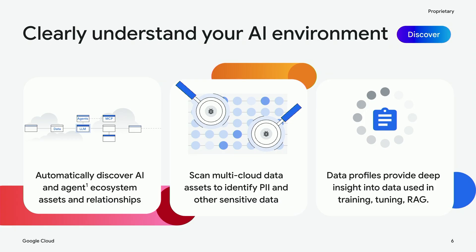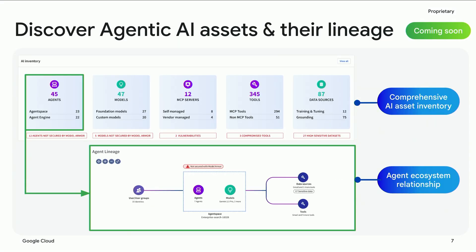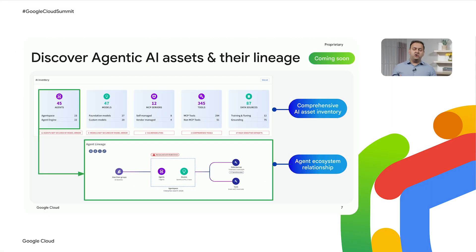Customers get all the information they need to understand what's going on within their AI environment. We'll be extending AI protection to cover discovery of AI agents and their ecosystem components like MCP servers, tools, etc. What you are seeing here is a snippet of the new AI inventory widget that is coming soon. This enables complete visibility for agents, MCP servers, the tools they interact with, the data sources they consume, and the communication channels between them. It will continuously monitor for AI agent activities and interactions, ensuring consistent governance across the entire agentic AI landscape. Customers can also easily map which agent space instances or agent engine these assets belong to — this will be the only such integration with agent space in the market.